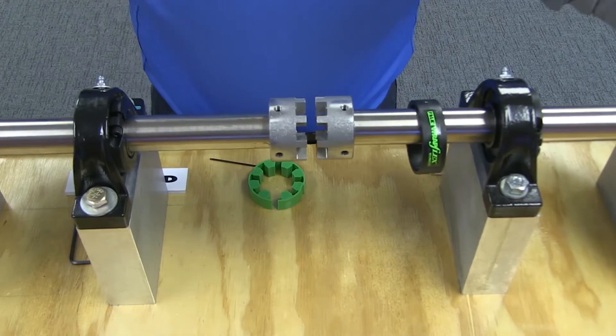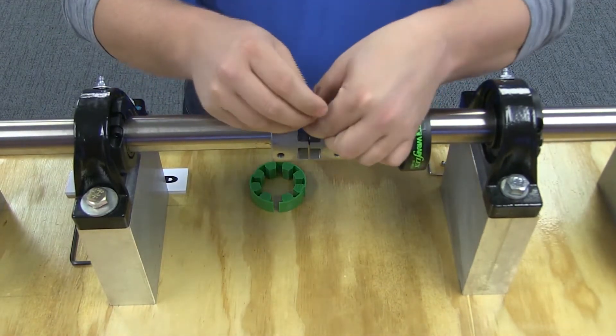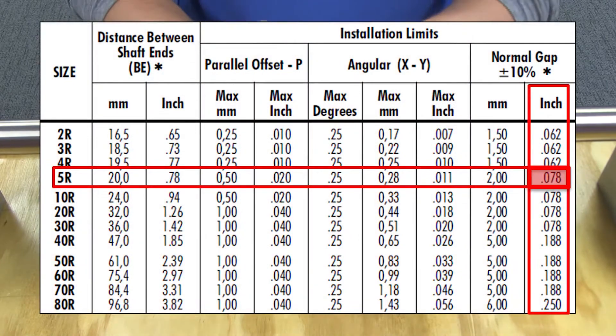Next, you set the gap and ensure proper angular alignment. For proper alignment, insert a spacer bar equal in thickness to the gap specified in this table between the hub teeth as shown.